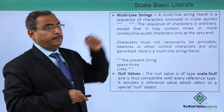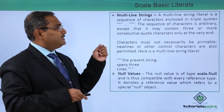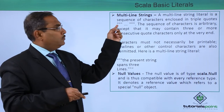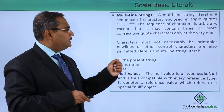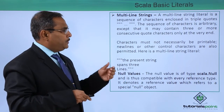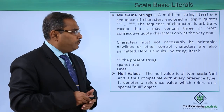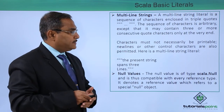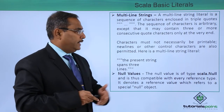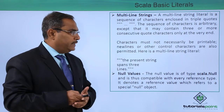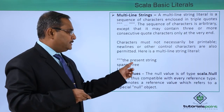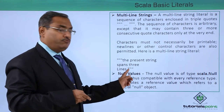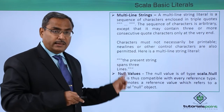We also have multi-line strings. A multi-line string literal is a sequence of characters enclosed in triple double quotes. The sequence of characters is arbitrary, except that it may contain three or more consecutive quote characters only at the very end. Characters need not be printable — newlines and other control characters are also permitted. Here is an example where the string spans three lines, fully enclosed within triple double quotes.